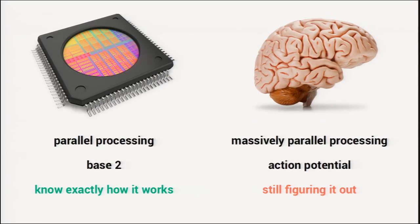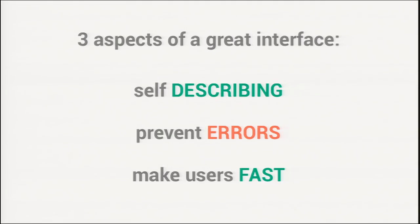For the purpose of this talk, it's kind of dehumanizing — we're going to treat people like information processing machines. You might think, well, I'm a special snowflake. And yes, you are. But for this talk, you're a uniform snow processing machine. So three aspects of a great interface: first, it needs to be self-describing; second, you need to prevent errors; and third, make users fast. We're going to dive into each of these.